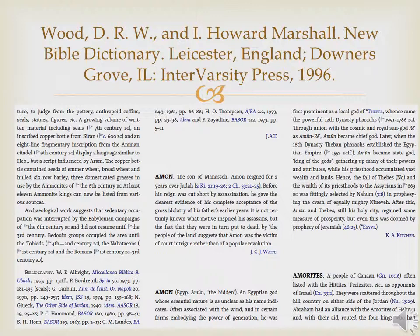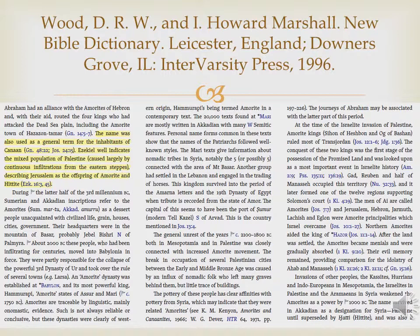Once you find Amorite in a Bible dictionary — if we use Wood and Marshall's New Bible Dictionary — we'd see that the name was also used as a general term for the inhabitants of Canaan. It also talks about how Ezekiel intended the mixed population of Palestine being a lot of Amorites. He gives background information, quoting different passages in Genesis and Joshua to show why the inhabitants of Canaan had the general term Amorite applied to them, and specifically mentions our Ezekiel passage — saying it's because so many Amorites made up the people of Palestine that that's why they're called their father.